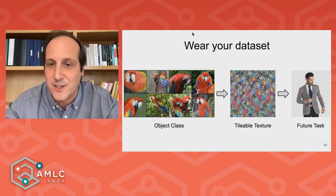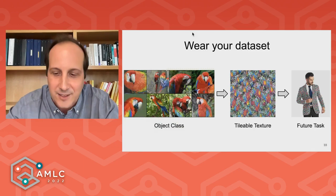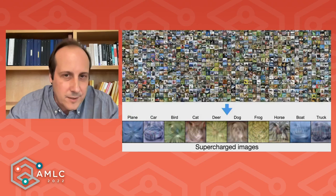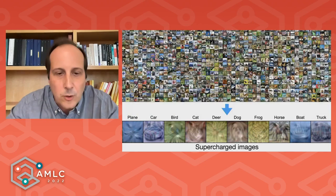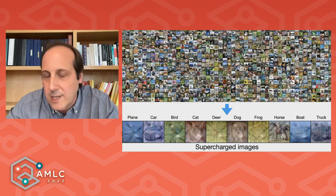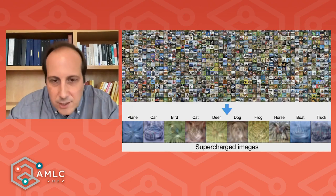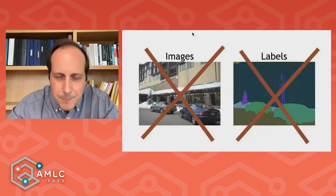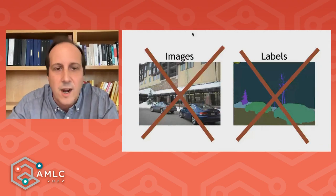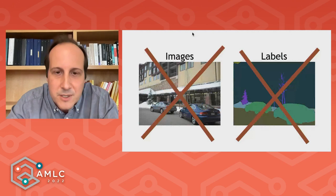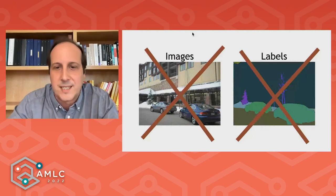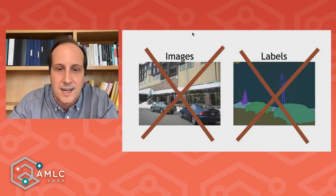If you have an object class like parrots, you can compress it into a tileable texture, and use this texture to make clothing — now you can wear your own dataset. This is just another application of being able to compress a dataset into a texture. So in this first part, what I was talking about was compressing a dataset into a few supercharged images that don't look real anymore — they are strange textures. But the problem is that even creating these supercharged images still requires using real images. So can we really get rid of real images and train visual systems with no images and labels at all?